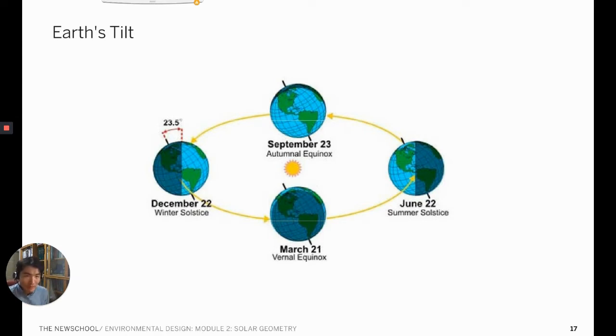Earth rotates and moves around the sun while tilted at about 23.5 degrees. Because of this tilt, the northern hemisphere faces the sun in June and the southern hemisphere faces the sun in December.